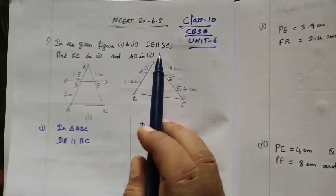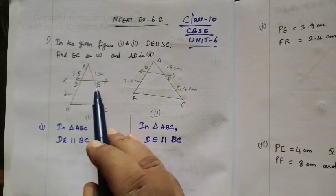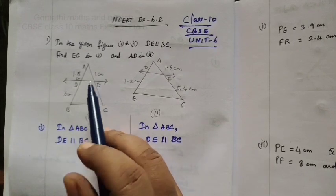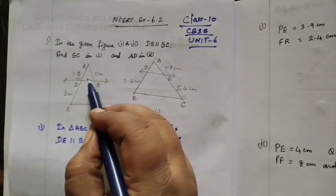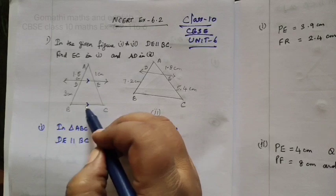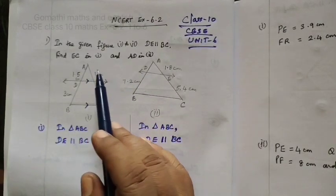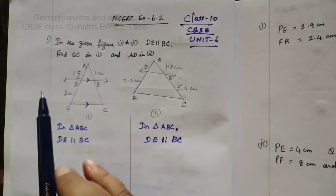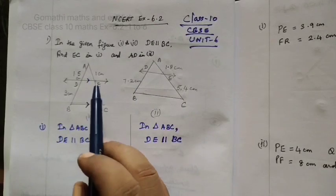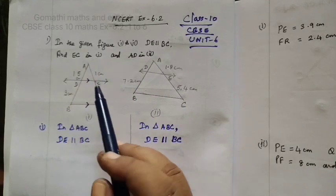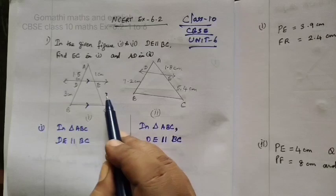In the given figures 1 and 2, D parallel to BC. In the first figure, you are finding EC.